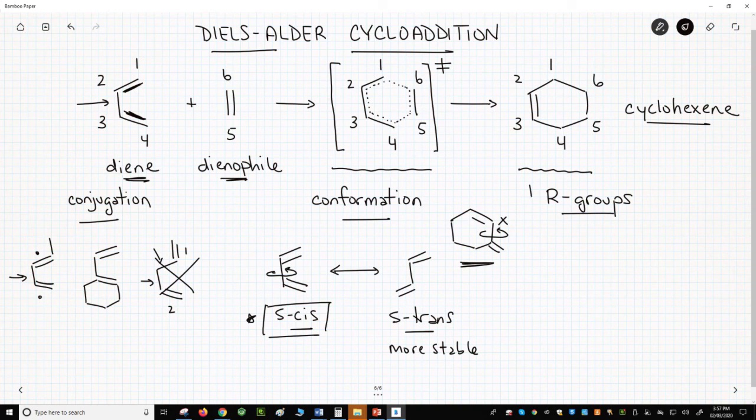A third detail. Let's talk about R-groups. You can have R-groups on your diene coming off the different carbons. In general, the diene has electron-donating groups as the R-groups, so most dienes are electron-rich.